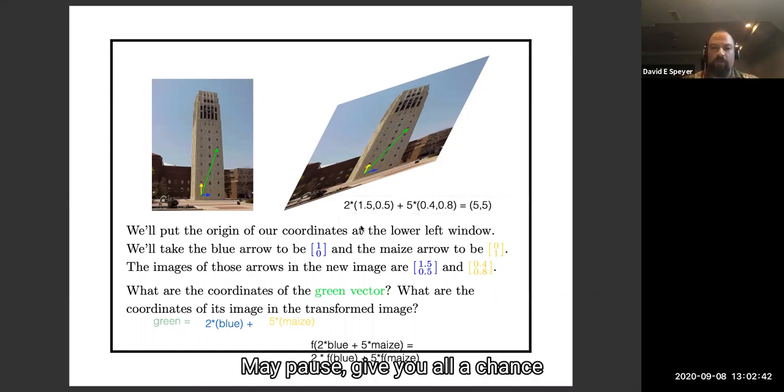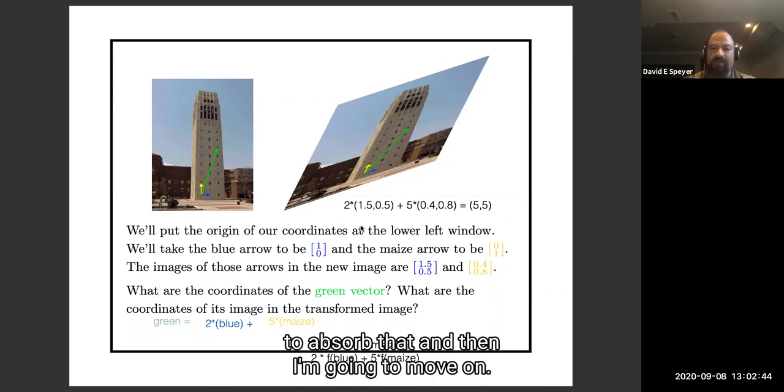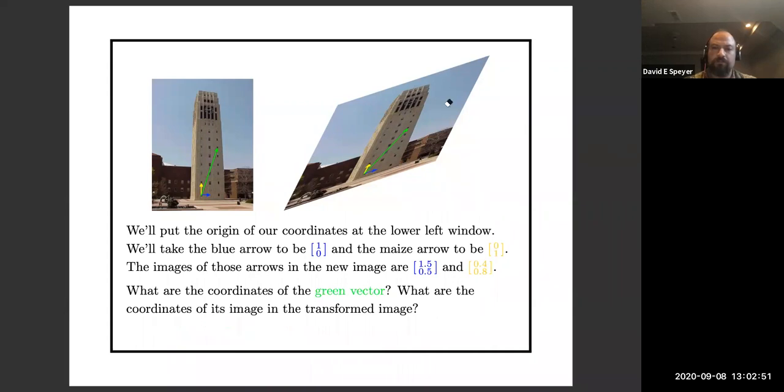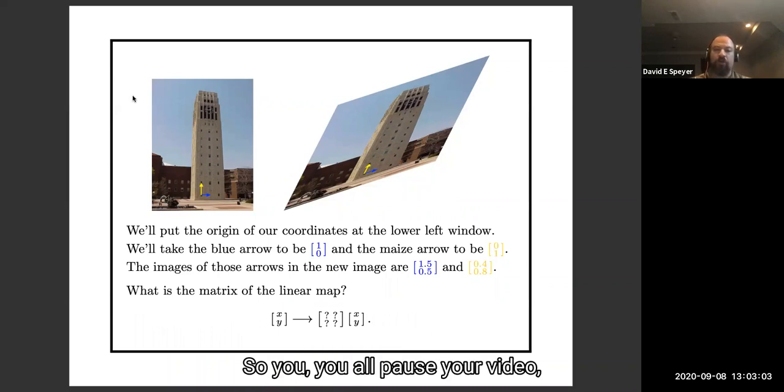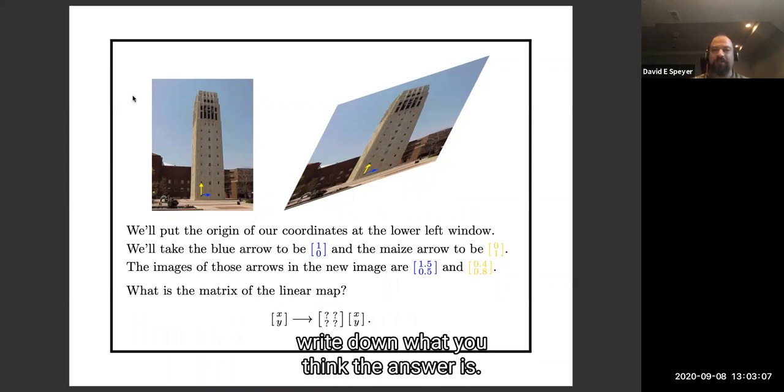I'm going to pause, give you all a chance to absorb that, and then I'm going to move on. Here's another question that we can ask, and I'll answer this a few slides later. What is the matrix of this linear map? You all pause your video, write down what you think the answer is. I'll talk about generalities, and we'll come to the answer soon.